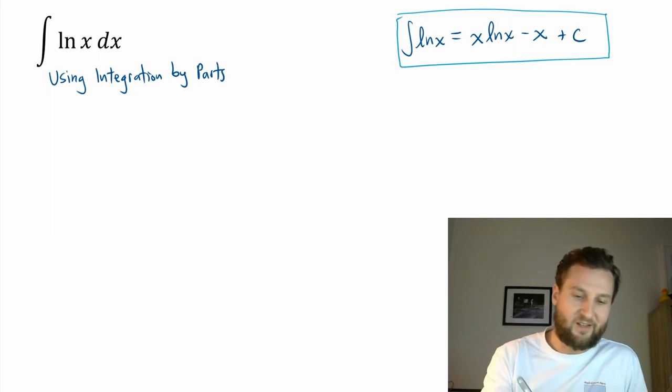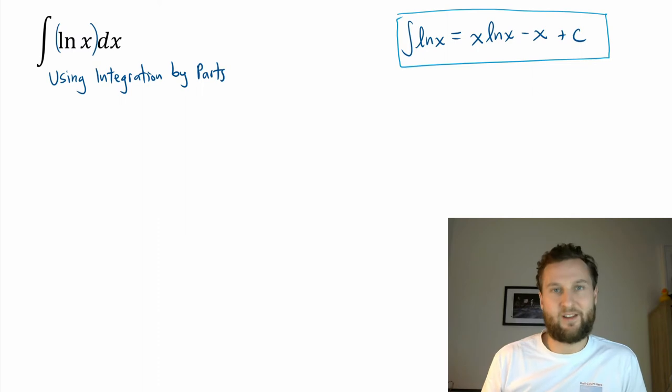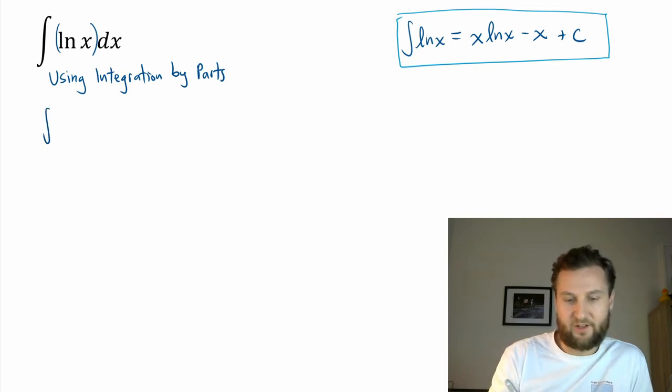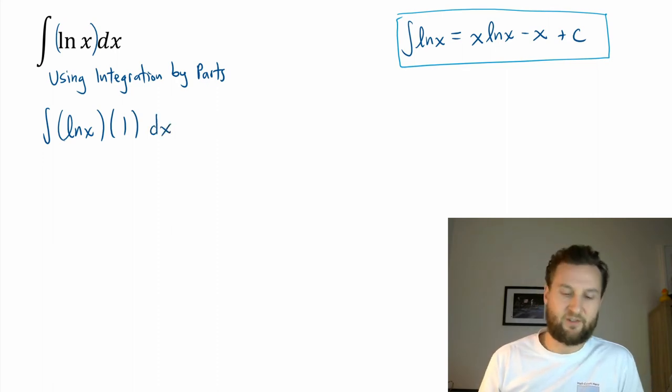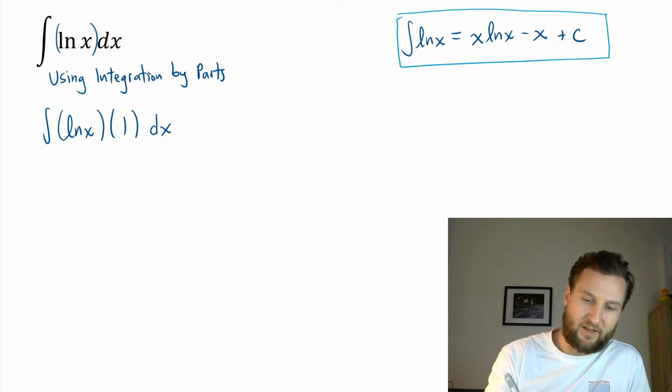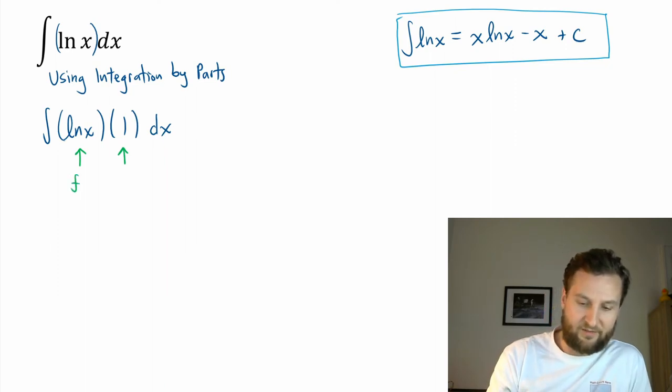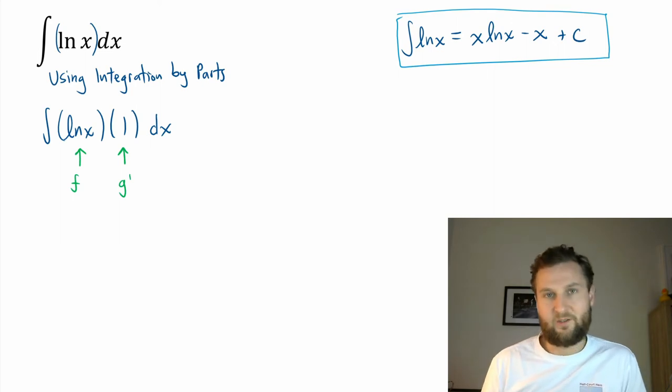Now the first thing that students ask me is, well, what do I have? I only have ln x. That x, you can't pull it out of the natural log. It's part of it. It's packaged together. So how do I split this into two functions? And here's the trick, is that you introduce another function that doesn't change the original function. So I've got ln x, and then what you're going to do is multiply it by 1. So that doesn't change that function, right? But it does introduce something else. And now you can say, oh, hang on. Now I have a split here. And so one of these can be f, and one of these can be g prime.